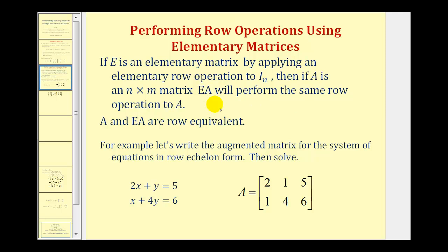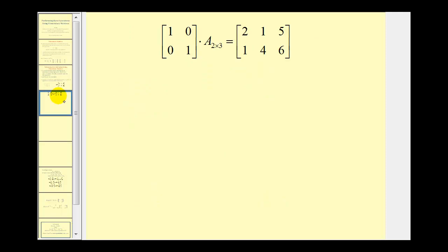To illustrate this property, we're going to write this system of equations as an augmented matrix — matrix A — and then solve it by writing this matrix in echelon form using elementary matrices. To get started, we need to recognize that the two-by-two identity matrix times matrix A will give us our augmented matrix. Now we're going to determine what row operations to perform on this matrix to put it in echelon form.